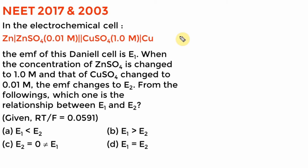Here is a question that has come twice in NEET — hence I always say to solve your previous year questions; the same question is repeated with the same numbers. In the electrochemical cell given, we have anode (oxidation) and cathode (reduction). This is a Daniel cell except it is not going to be at standard condition. Standard condition gives 1.1 volt. In cell 1 it is 0.01 molar; in cell 2, zinc sulfate changes to 1 molar and copper changes to 0.01 molar. So what will happen to the EMF?